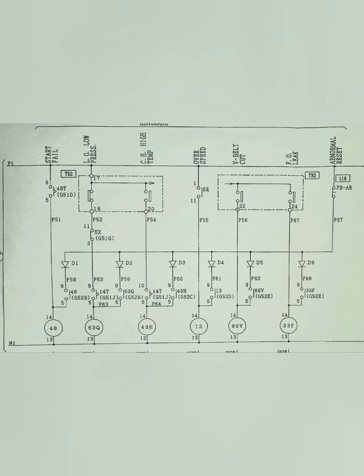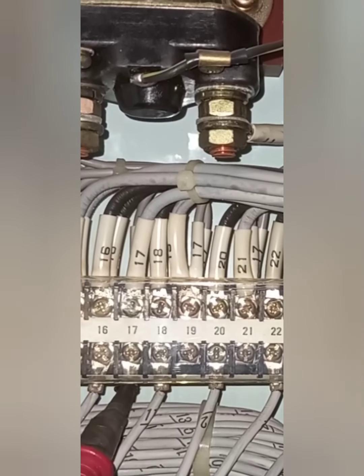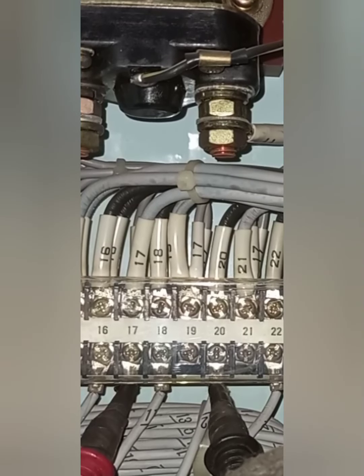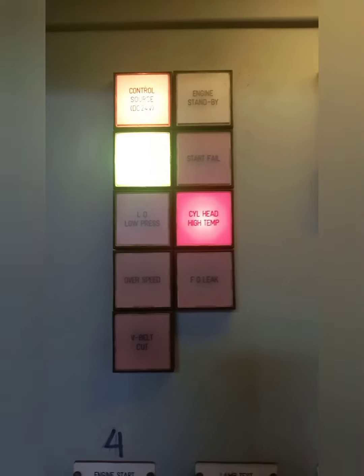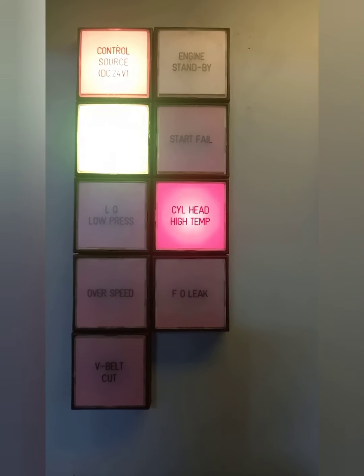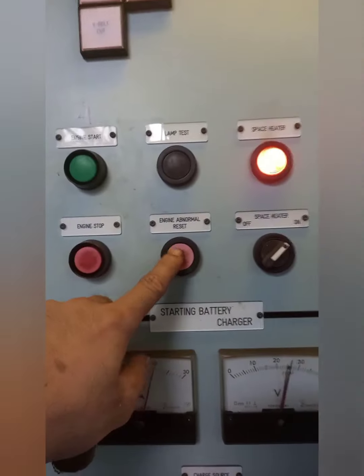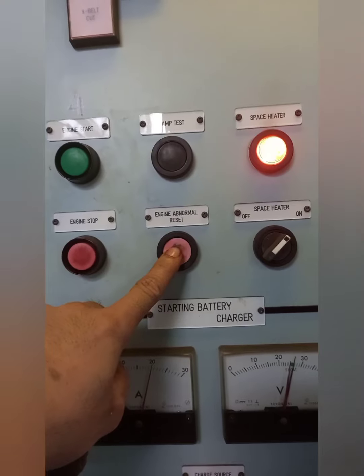Next is the cylinder head high temperature alarm. From the electrical circuit diagram, use a jumper cable and connect number 17 and number 20. Then press the reset or normal alarm button and stop the engine.